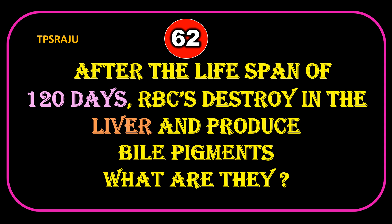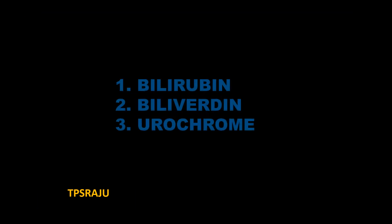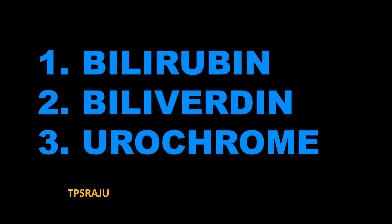After the lifespan of 120 days, RBCs are destroyed in the liver and produce bile pigments. What are they? Bilirubin, biliverdin, and urochrome.